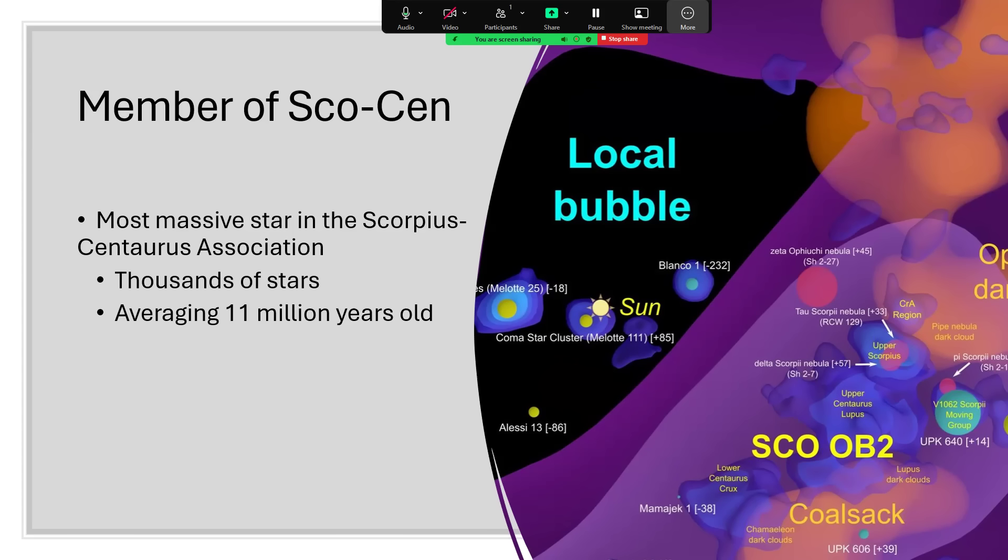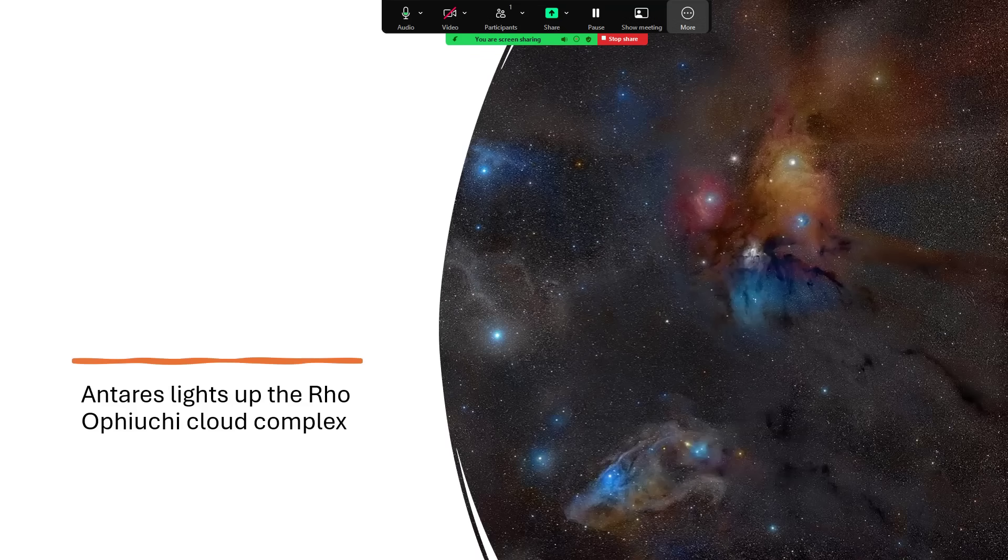Now these stars are around about that 11 million years old, all having been born together. So it's been a very, very active region. And when we look at it, we see one of the most fascinating clouds of nebula material being lit by the light of Antares.